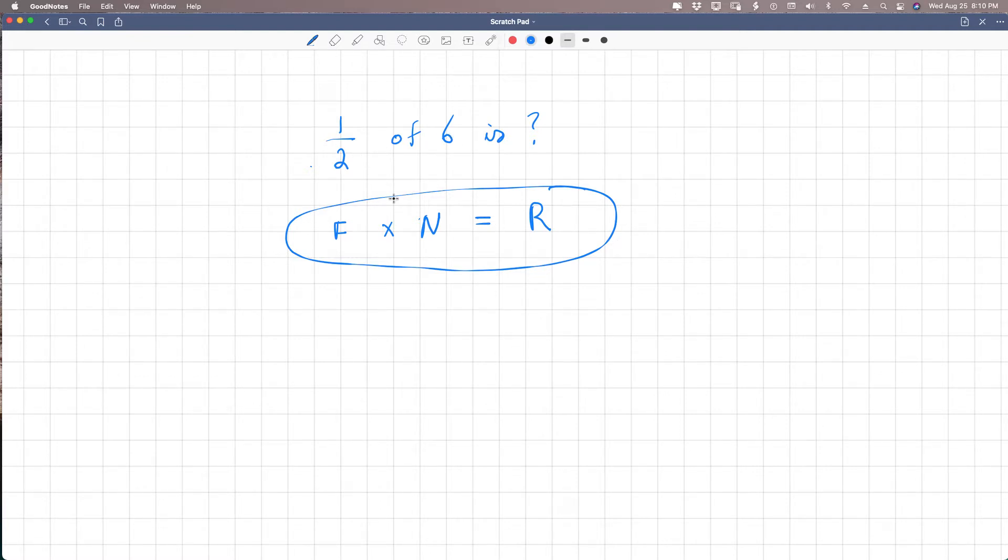If we were to sub in these numbers into this format, we would say one half times six equals, and let's just say R for result, because we don't know what that is yet. How do we multiply a fraction times a whole number? We put the whole number over one, one times six is six, two times one is two, six divided by two is three. And we can agree that half of six is three. And we can see how we got that mathematically.